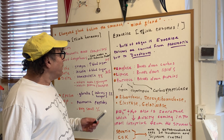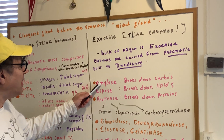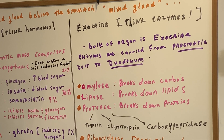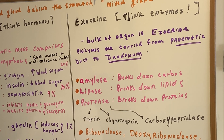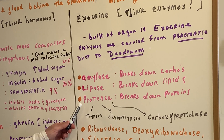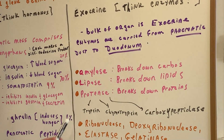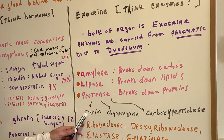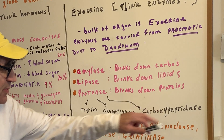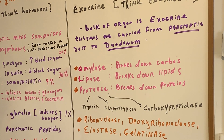The exocrine function will produce amylases, lipases, and proteases, which break down the carbohydrates, lipids, and proteins respectively. You don't need to know specifics about the proteases, but at least know that trypsin, chymotrypsin, and carboxypeptidase are proteases.